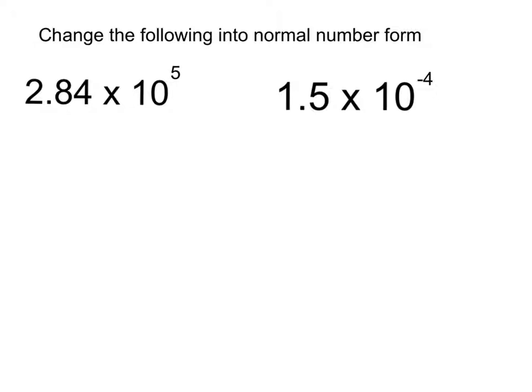So the first one is a large number, as we've got a positive power. So I would write out the 2.84, and what this 5 says is I need to have 5 numbers behind this decimal place.